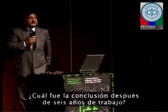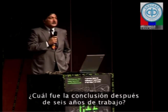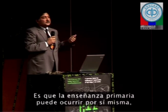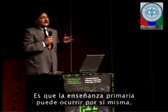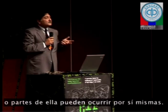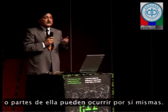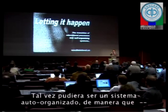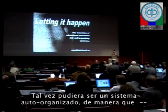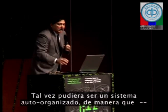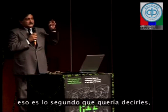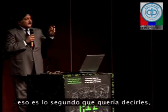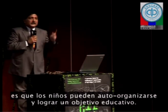So what was the conclusion of all these six years of work? Primary education can happen on its own, or parts of it can happen on its own — it does not have to be imposed from the top downwards. It could perhaps be a self-organizing system. That was the second point: children can self-organize and attain an educational objective.